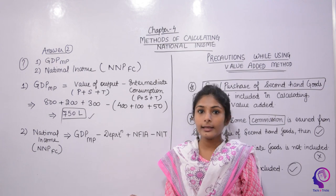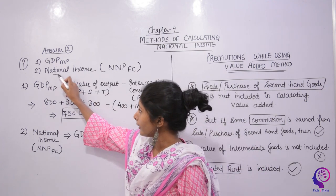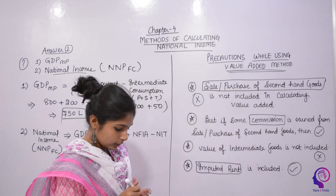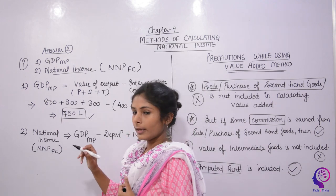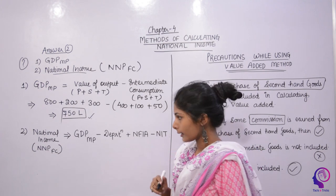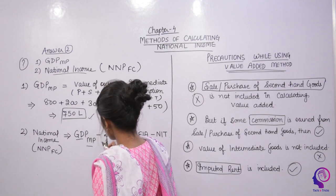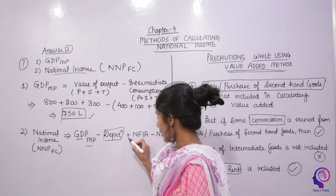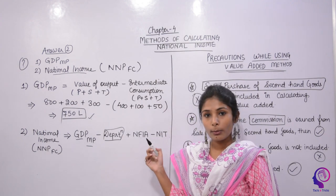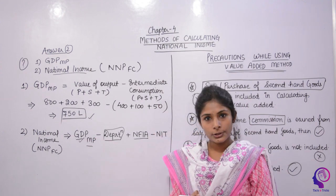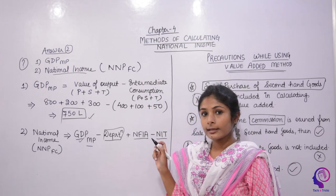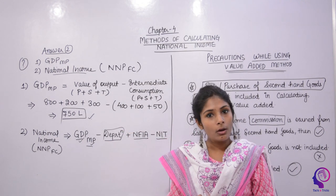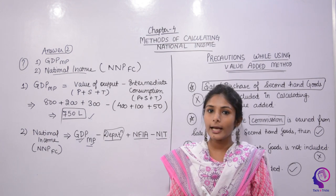Now we need to convert GDP at Market Price to NNP at Factor Cost to get national income. The conversion steps are: GDP MP, first subtract Depreciation — this makes it 'Net'. Then add NFIA (Net Factor Income from Abroad) — this makes it 'National'. Finally, subtract Net Indirect Taxes — this converts it from Market Price to Factor Cost.